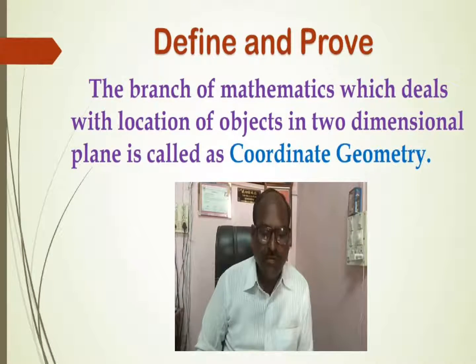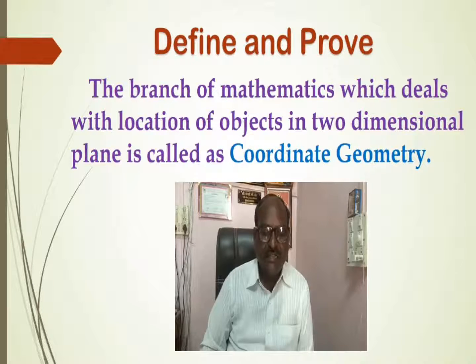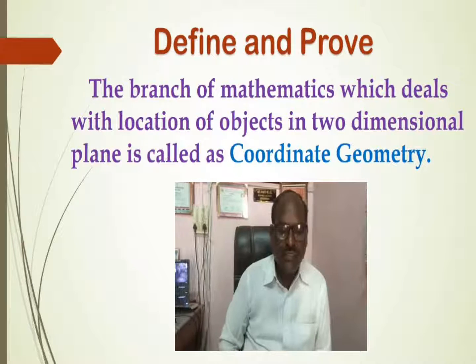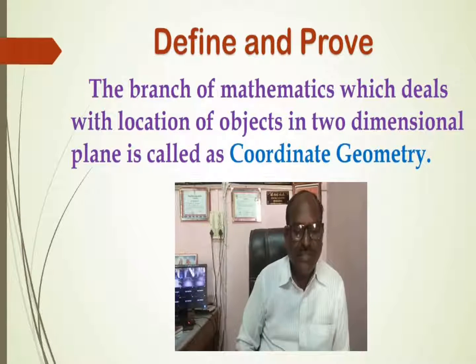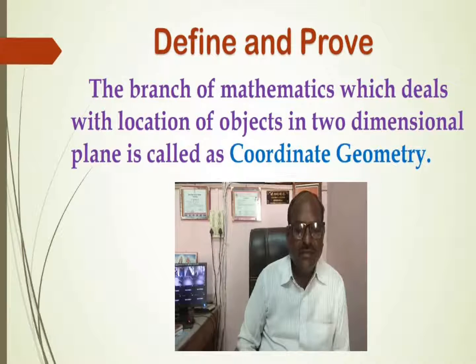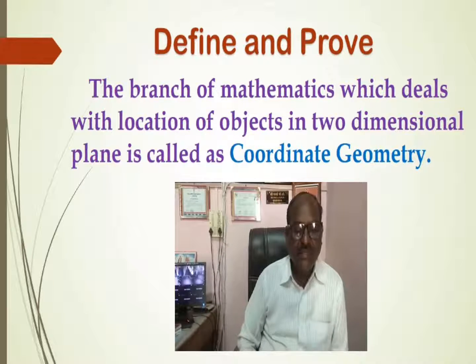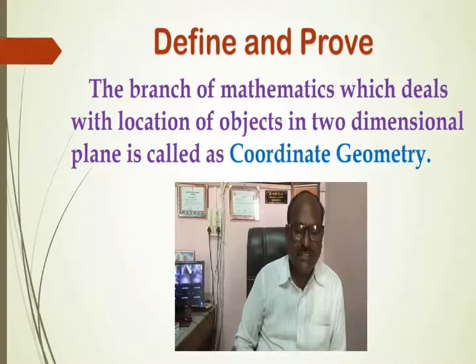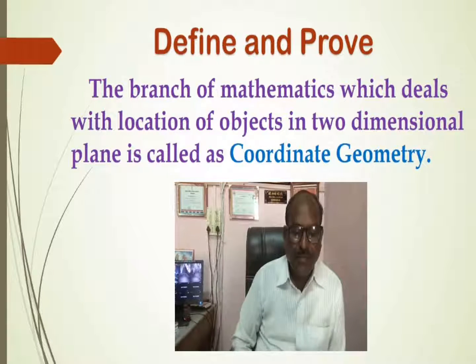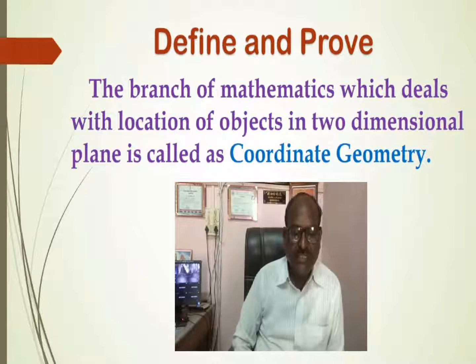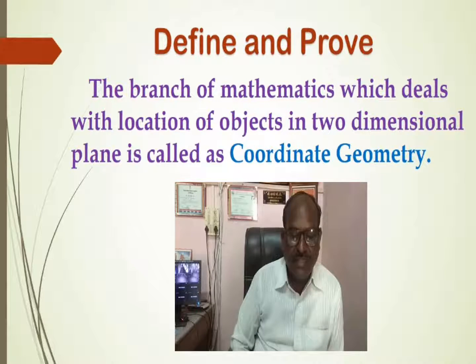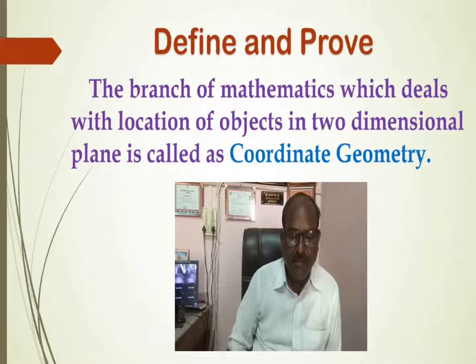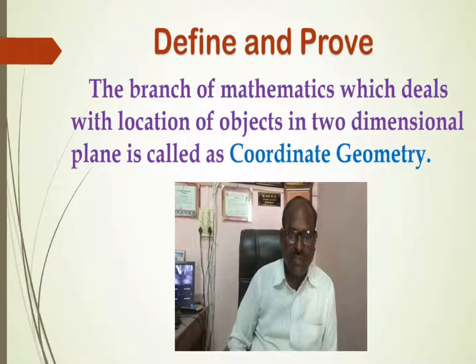In all of our examples, we have seen that to describe object we need two numbers, that means number of rows as well as number of columns. Hence, the branch of mathematics which deals with location of object in two-dimensional plane is called as coordinate geometry.